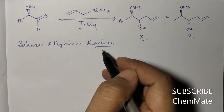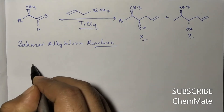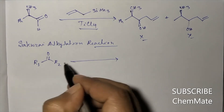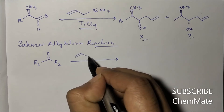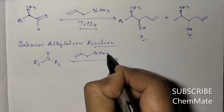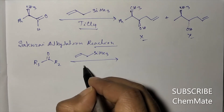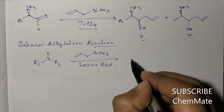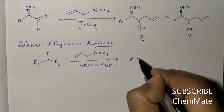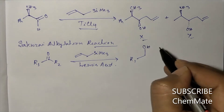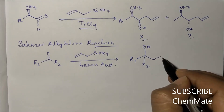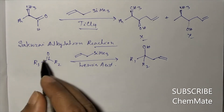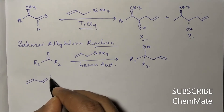In the Sakurai alkylation reaction, the general reaction is like this: a ketone treated with allyl silane in the presence of a Lewis acid gives a specific product. And if it occurs with an alpha-beta unsaturated ketone, a different pathway applies.